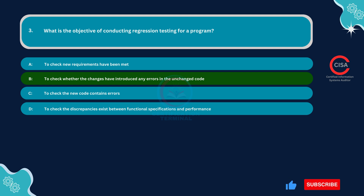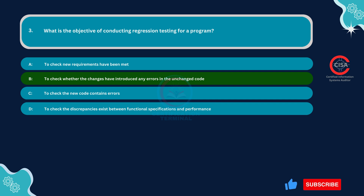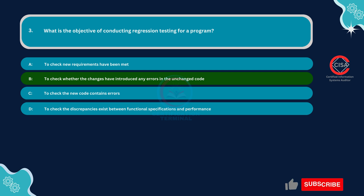This option accurately reflects the primary objective of regression testing. It involves retesting the unchanged parts of the program to ensure that modifications or updates have not inadvertently introduced errors or side effects. By verifying the integrity of the unchanged code, regression testing helps maintain the overall reliability and functionality of the program despite changes made elsewhere.